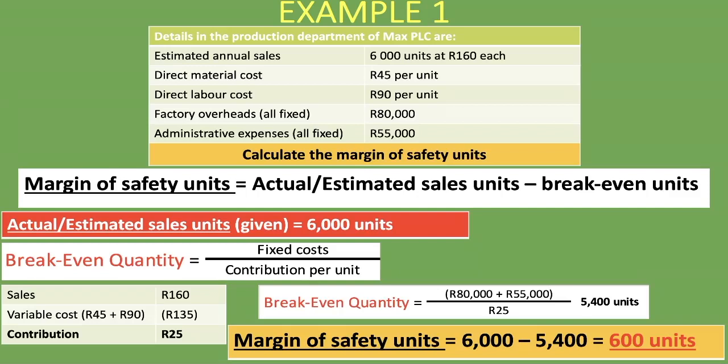If sales suddenly drop or change because of an event or anything that might happen, the margin of safety units tells you how much room the company has in losing the sales units it's expecting to sell before it stops being profitable. So the 600 units is how much the company is able to sell over and above the break-even units, and that is why we calculate the margin of safety units. I hope you've gained value from this lesson. If you have, consider subscribing to our channel, liking this video, and sharing it with those who think it might help. Till next time, cheers.